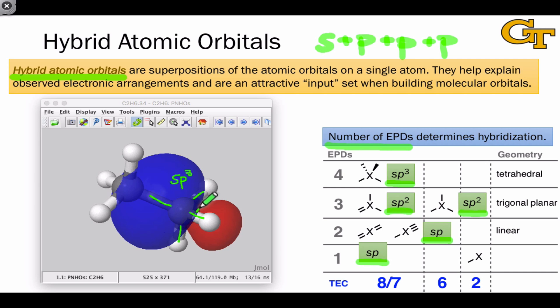They look kind of like elongated p orbitals with more density on one side than the other. And we get this density-enhancing effect on one side because the p and s orbitals reinforce one another on this side and actually cancel or interfere with one another on the other side.